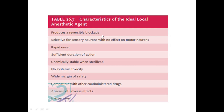It should have selectivity for sensory neurons with no effect on motor neurons. Motor neurons means muscles which can move. Sensory neurons deal only with the sensation of pain. And it must have very rapid onset.